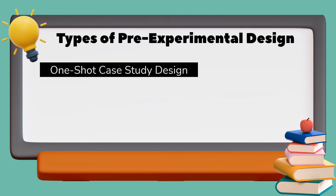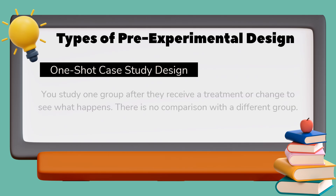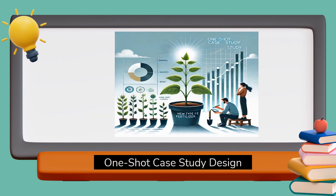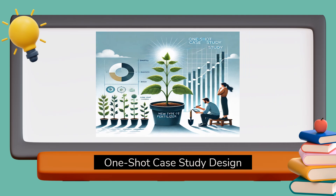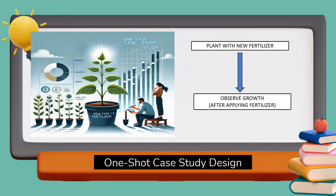In one-shot case study design, you study one group after they receive a treatment or change to see what happens. There is no comparison with a different group. For example, you give a new type of fertiliser to a plant and observe its growth. You look at this one plant alone and see how it grows without comparing it to other plants that didn't get the fertiliser.